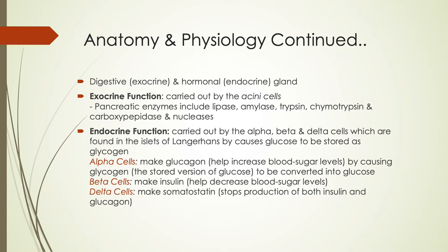It's important to remember that the pancreas is both an exocrine and an endocrine organ. The exocrine portion is carried out by the acini cells, which help create and release pancreatic enzymes to help our bodies digest food. The endocrine portion is carried out by the islets of Langerhans, which are made up of alpha, beta, and delta cells. The alpha cells create and release glucagon, a hormone that helps raise blood sugar levels by having glycogen converted into glucose and released into the blood.